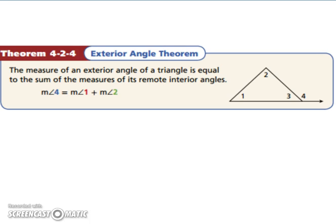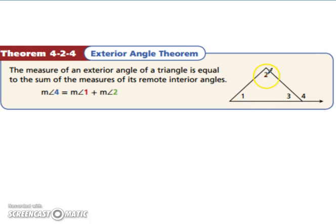There's a theorem that goes with this: if you add your two remote interior angles — the measure of angle 1 plus the measure of angle 2 — that's going to give you the measure of the exterior angle, angle 4.